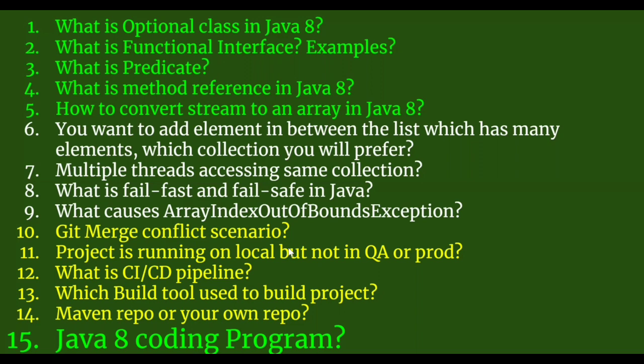What is Predicate? Predicate is also a functional interface and you can write one test condition using it. For example, you have a list with integer elements and you want to filter only elements greater than 80 — like who can vote. You can write a predicate with the condition 'a is greater than 18' and pass this predicate to the filter method of a stream to get the filtered results.